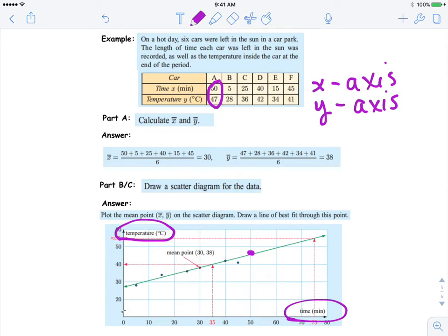They want you to calculate the mean for x and the mean for y. So we've done this on a previous video, so just to review with you: you're going to add all the x values together, and then divide it by how many data points there are. There are six ordered pairs, so divide it by six. So the mean is 30.